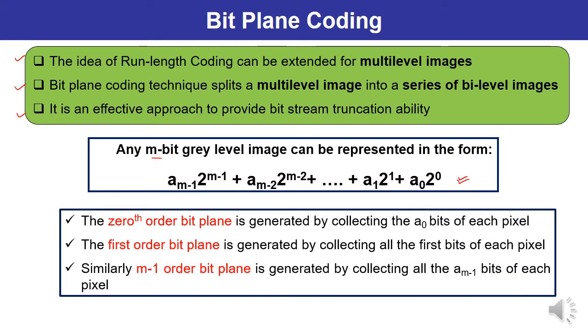What is the procedure for bit plane coding? First you have to represent it in that particular form. Then 0th order bit plane is generated by collecting a0 bits of each pixel. First order bit plane is generated by collecting all the first bits of the pixel. Similarly, (m-1)th order plane can be generated by collecting all a(m-1)th bits of each pixel. So any plane can be generated, but corresponding to that plane, that number of bits will be collected from each and every pixel.